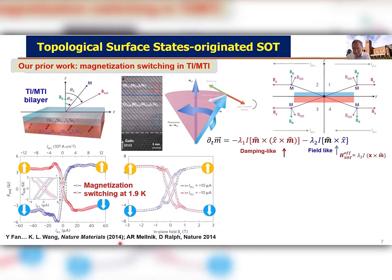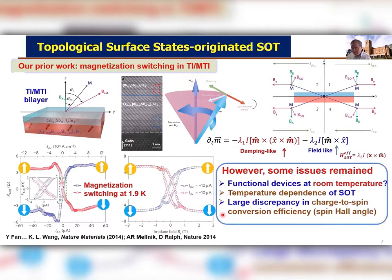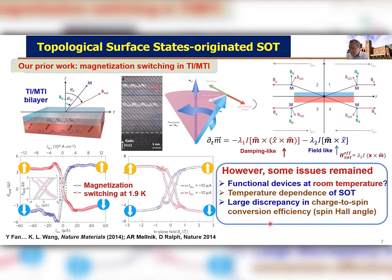At about the same time, Dan Ralph's group also published similar experiments and similar structures, using ferromagnetic resonance experiments. At the time there was clearly an issue about the magnitude — we showed it was about 5,000 times larger than the metal case, which was quite surprising. Questions arose about whether it would function at room temperature and what the temperature dependence would be, and there seemed to be a lot of discrepancies in the results.